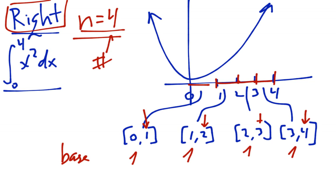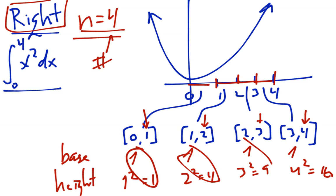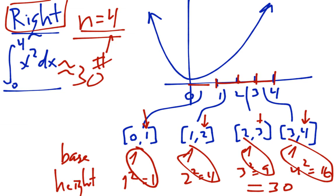I plug in 1 squared, 2 squared, 3 squared, and 4 squared. That gives me 1, 4, 9, and 16. Remember it's base times height: 1 times 1, 1 times 4, 1 times 9, 1 times 16. This gives me a total area of 30. So this area is approximately 30 using a right-hand sum.